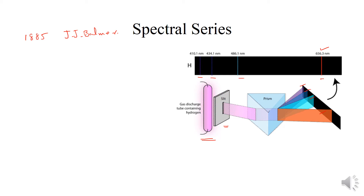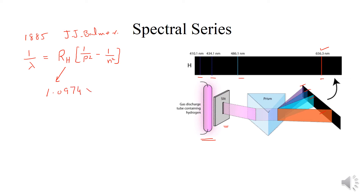جس سے ہمیں output پر مختلف کسم کے colors ملتے ہیں اور ان colors کی مدد سے ہم آسانی سے ان کی wavelength calculate کر سکتے ہیں۔ اس کا generalized formula 1896 میں J.R. Rydberg نے provide کیا: 1/λ = R_H (1/p² − 1/n²)۔ Rydberg constant کی value ہے 1.0974 × 10⁷ per meter۔